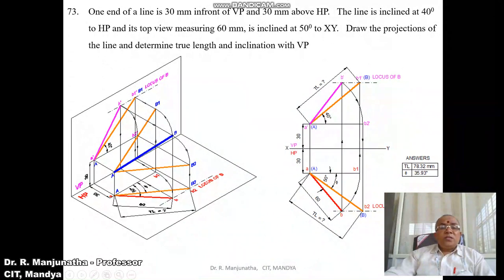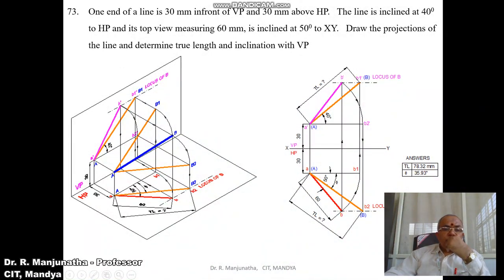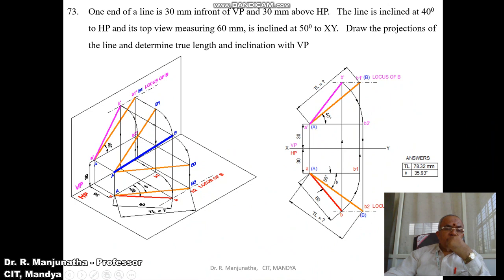Now we need to find the true length in the top view. We make the line parallel to HP. Once we know the front view and the top view, we have the line AB in space. With A as center and radius AB, rotate it to make capital AB2 parallel to HP. This means A is above HP by 30 mm and capital B2 is also above HP by 30 mm, so the line is parallel to HP and we get the true length.